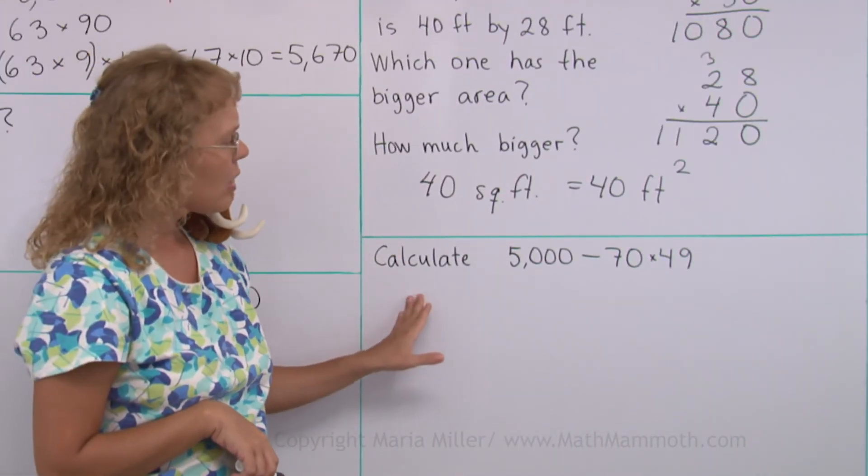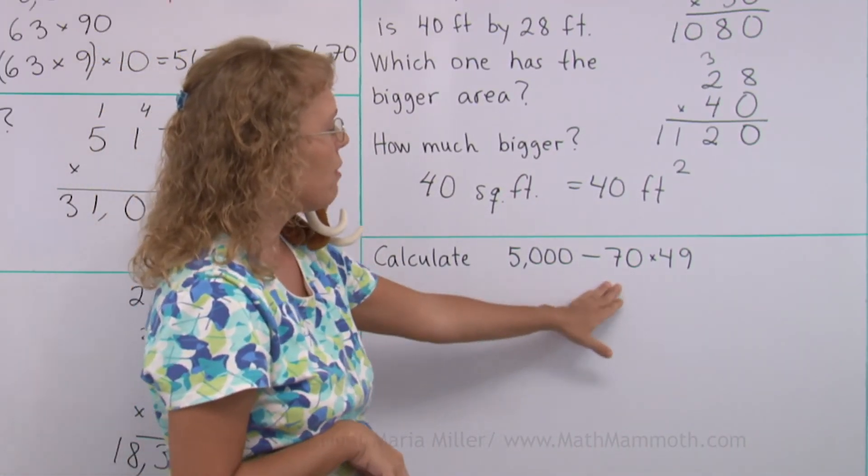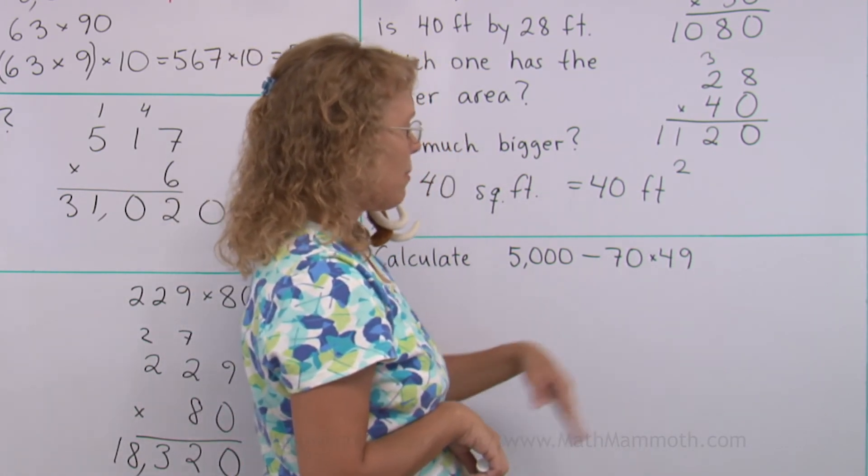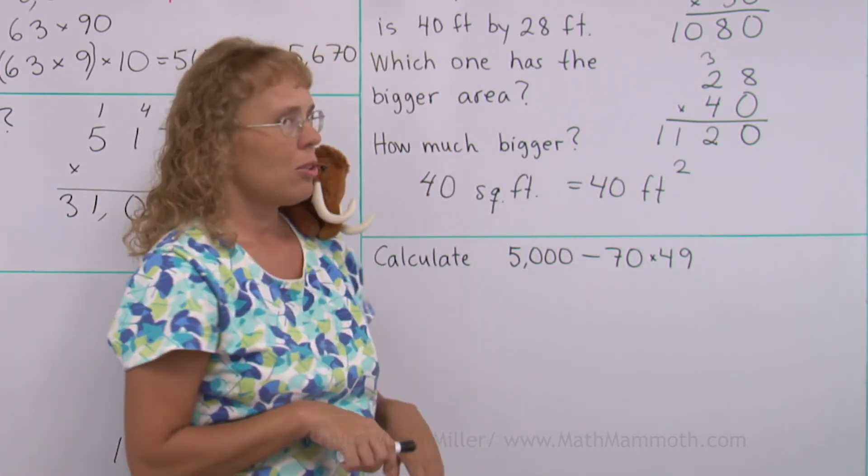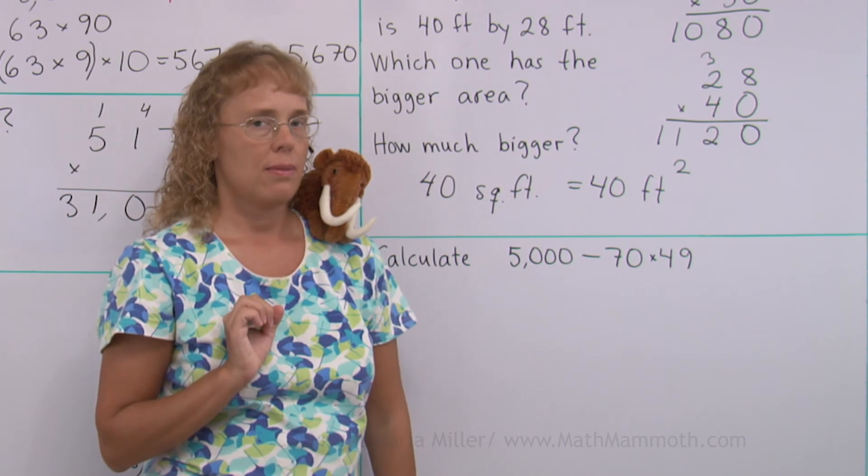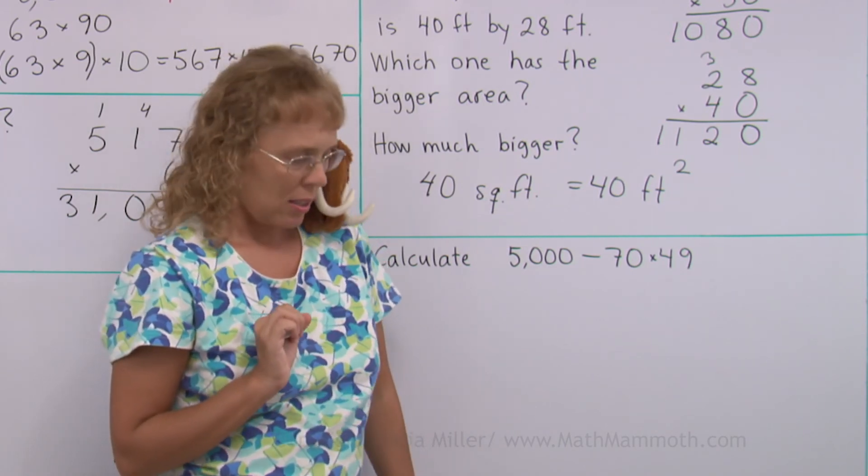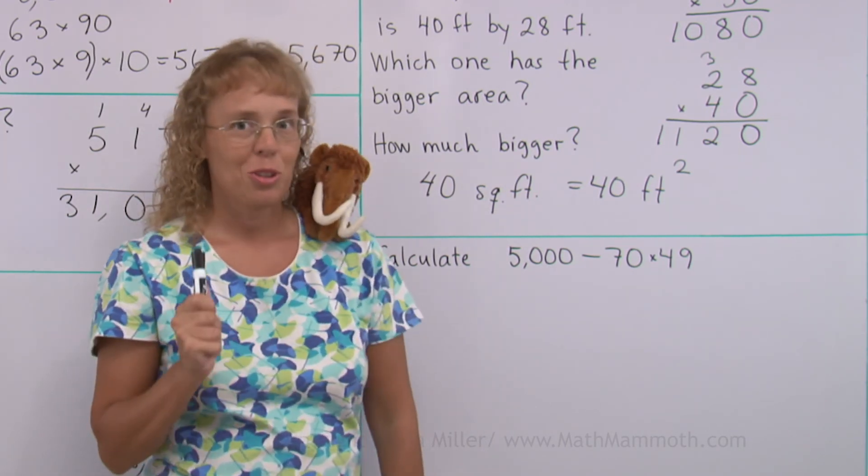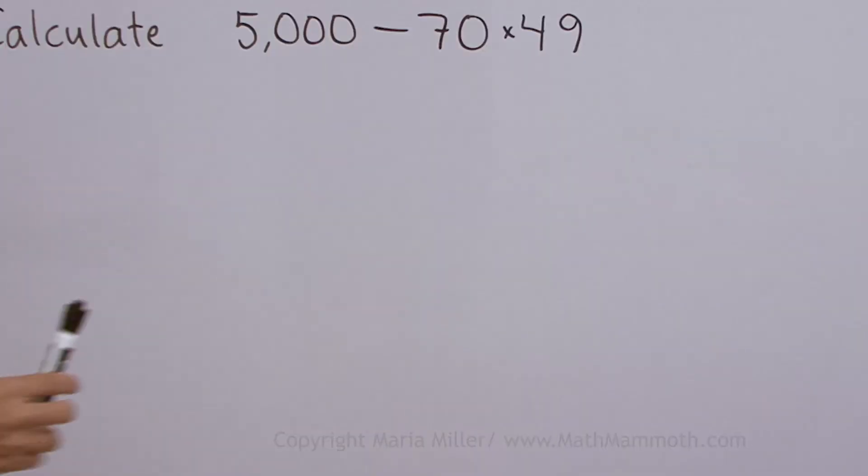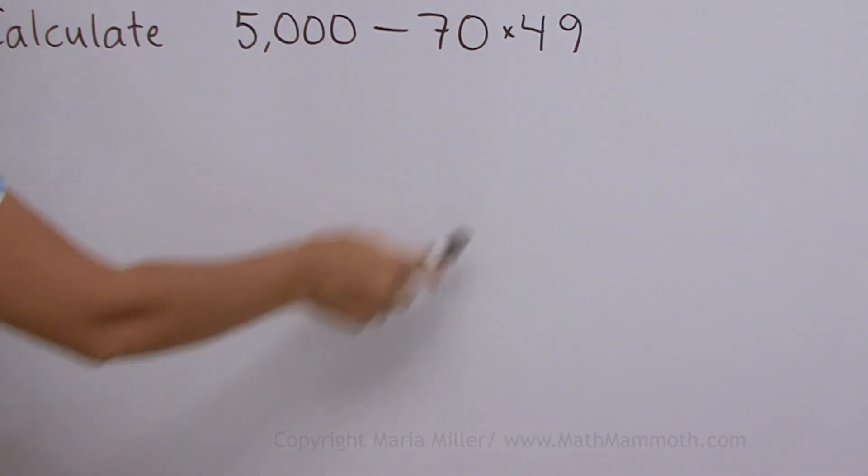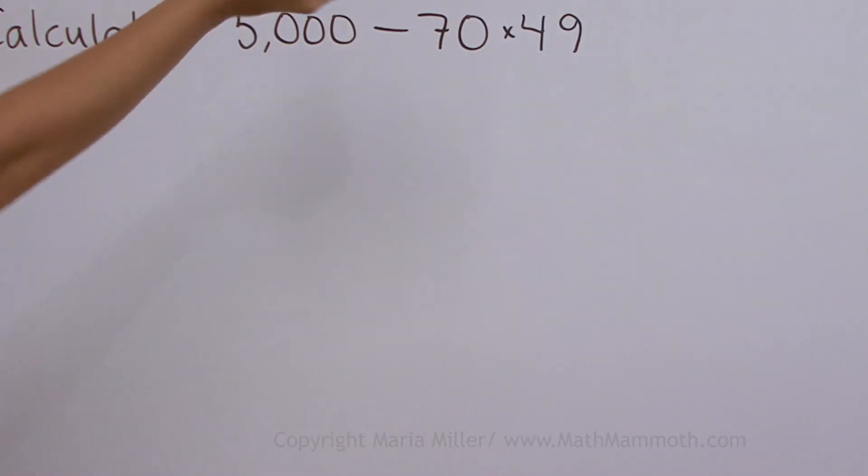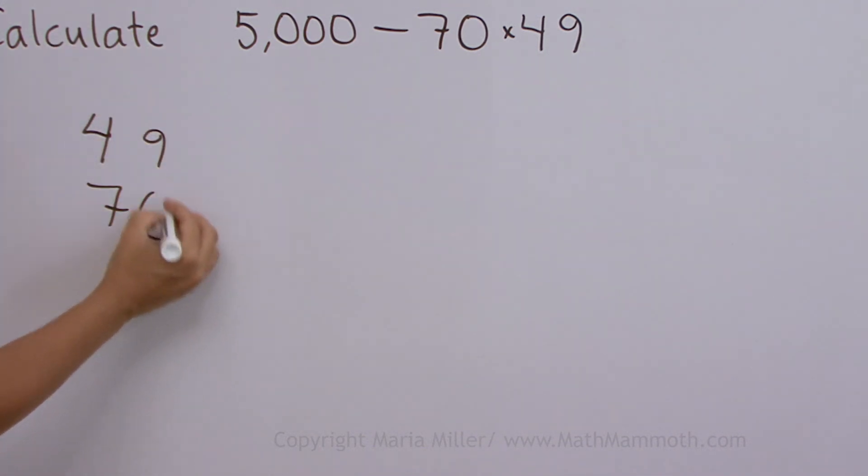And lastly, calculate 5000 minus 70 times 49. There's something you need to remember before you start. What's that? Oh, Matthew knows. Order of operations. We do not subtract first. We multiply first. 70 times 49. But see, I can use my trick. So I will put 49 and then 70 under. So multiply first.